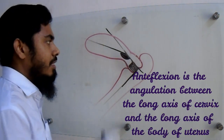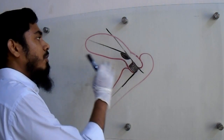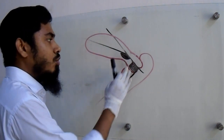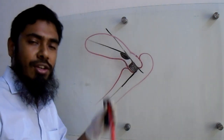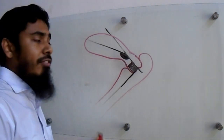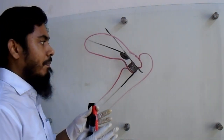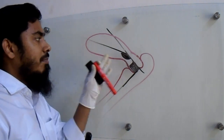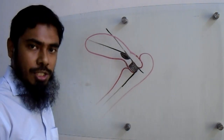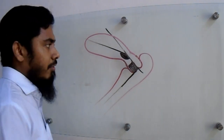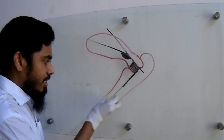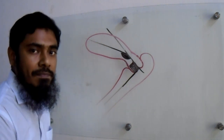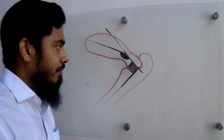These two positions — anteversion and anteflexion — and this angulation are very important to keep the uterus in position. Because of this angulation, the uterus does not descend down through the vagina.